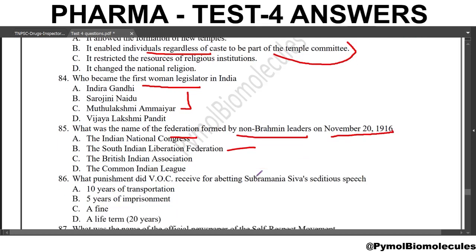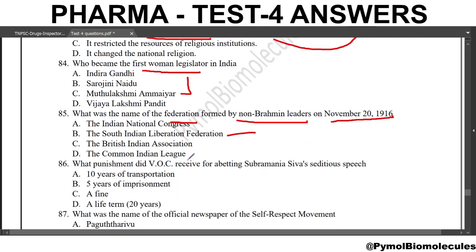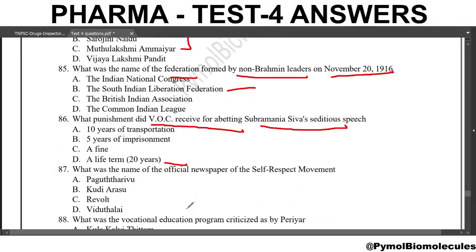Next question: what was the punishment V.O.C. received for abetting Subramania Siva's seditious speech? The answer is a life imprisonment of 20 years. Next question: what was the name of the official newspaper of the self-respect movement? The answer is Kudi Arasu.